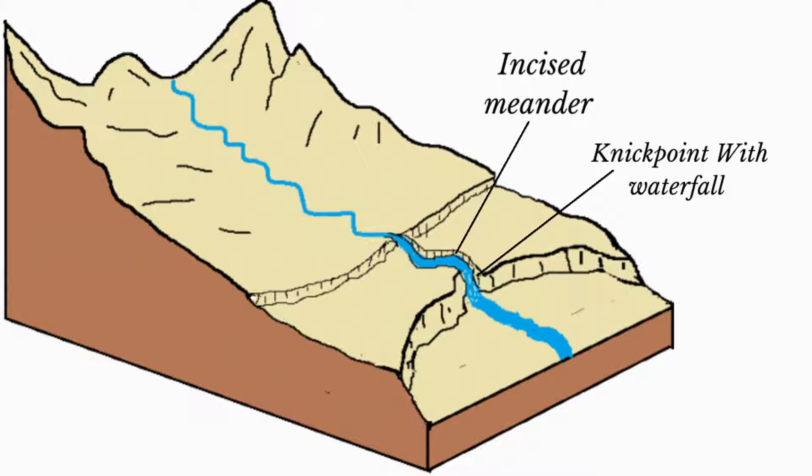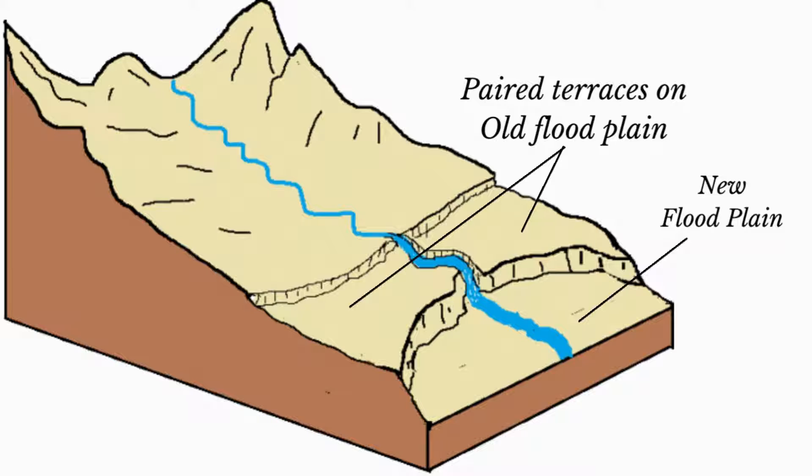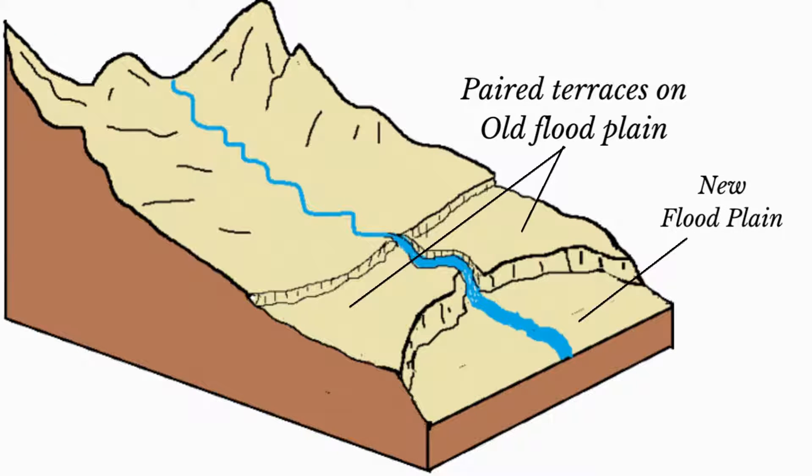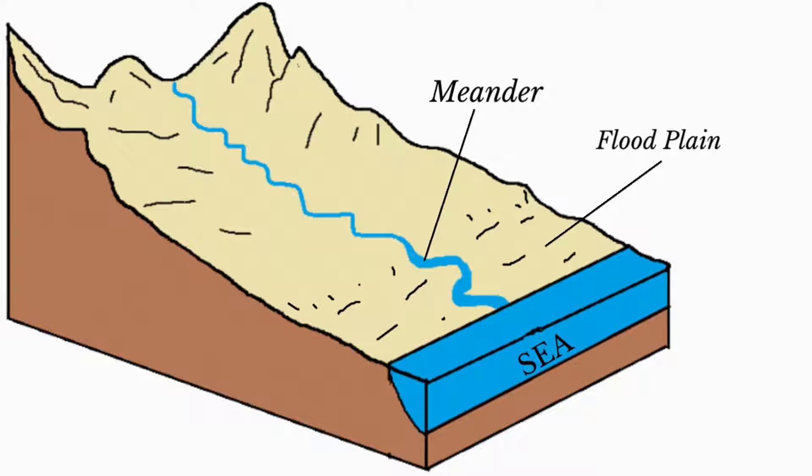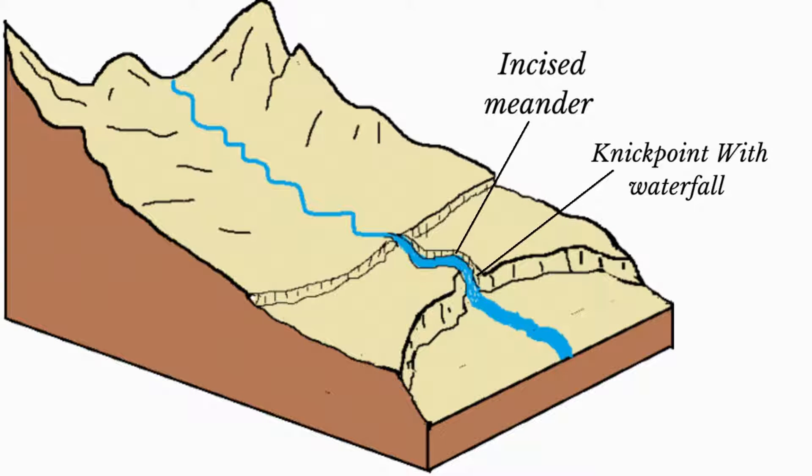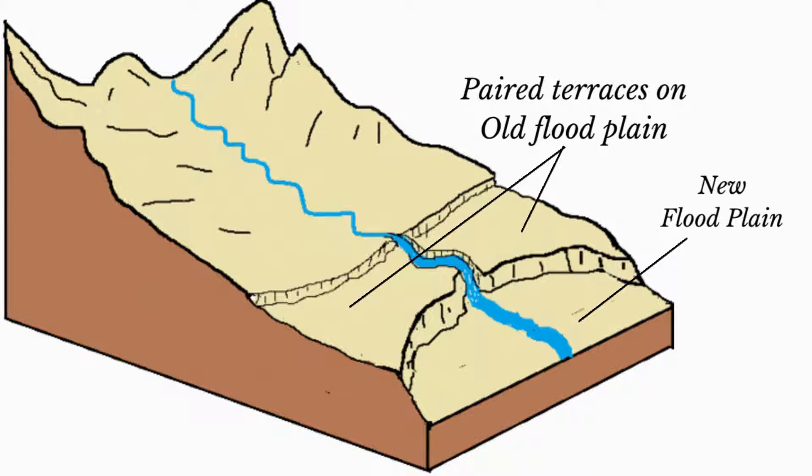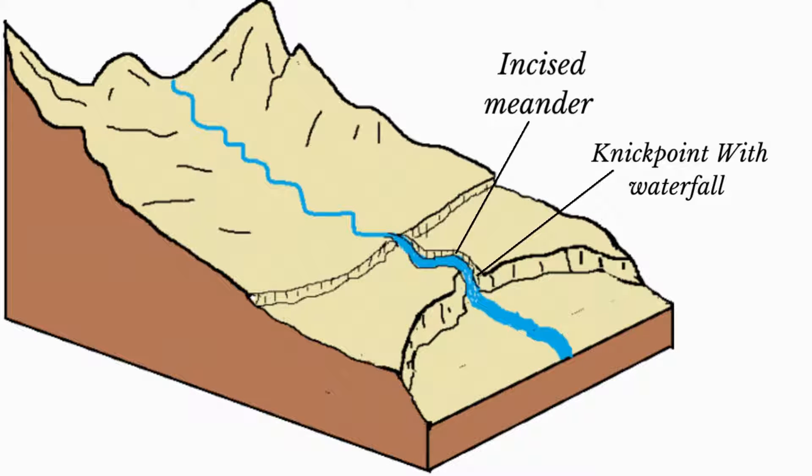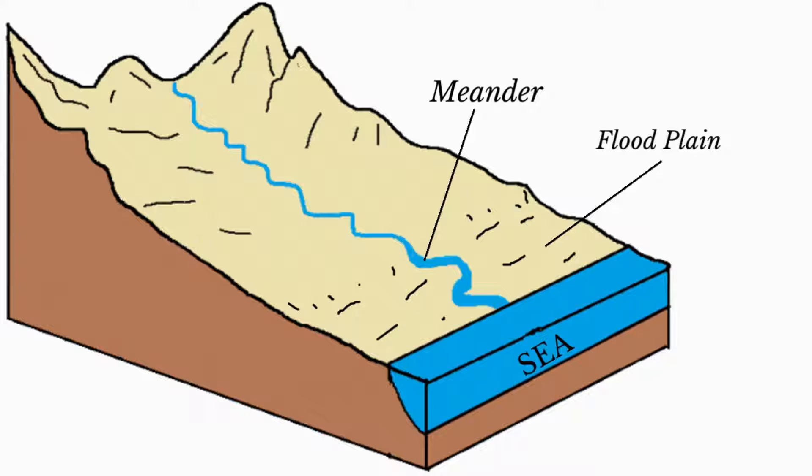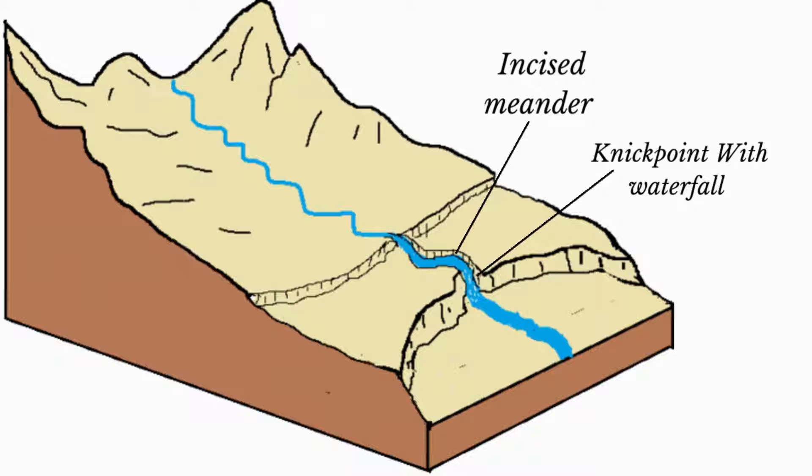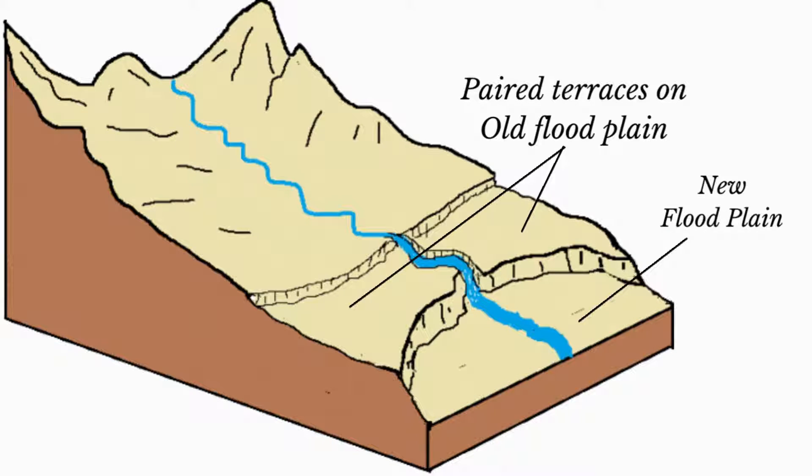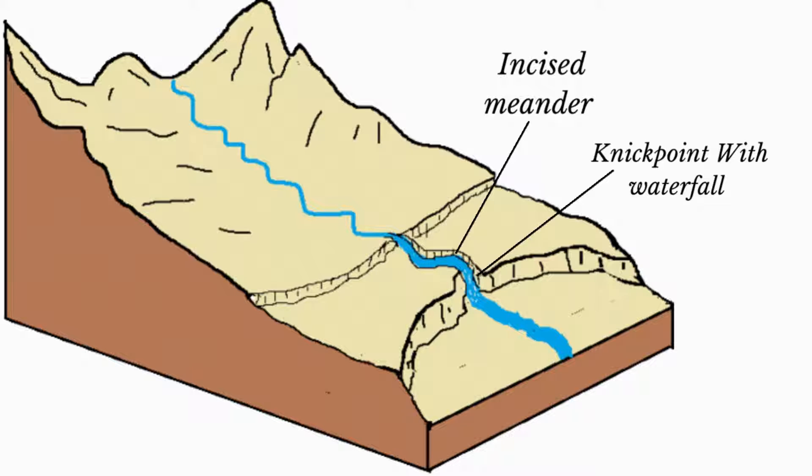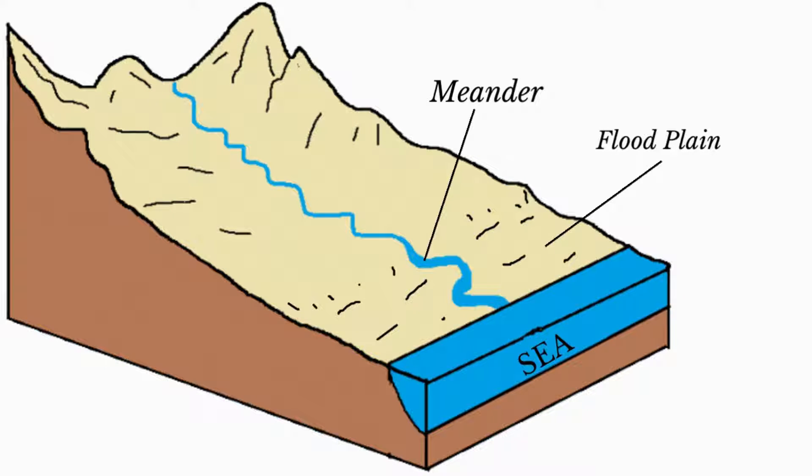So let us have a look at the features formed by rejuvenation once more. Notice that at the nick point where the gradient changes significantly, a waterfall has developed. As the waterfall retreats, a gorge will develop. And we also know that rapids could also form at the nick point. Also notice, as the old floodplain gives way to the new floodplain, a river terrace is formed. Furthermore, due to increased vertical erosion, the simple meander has deepened to form an incised meander.